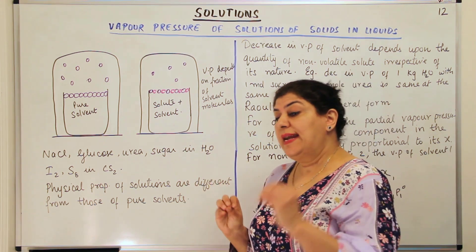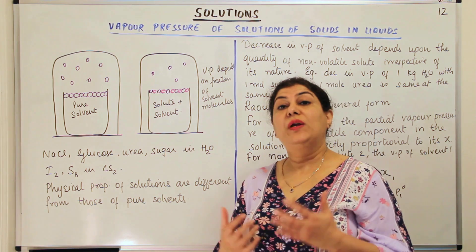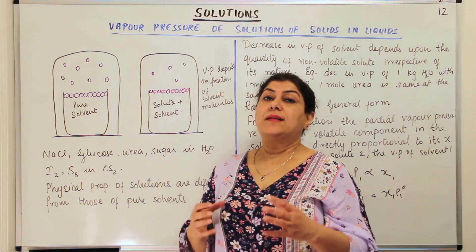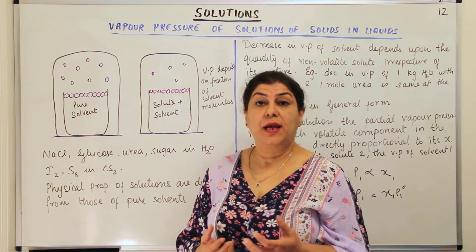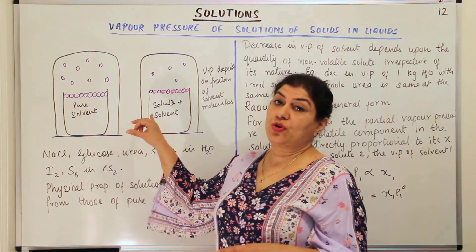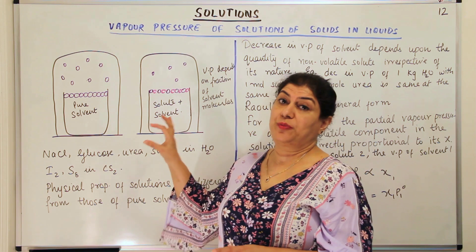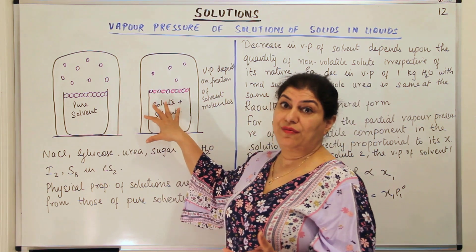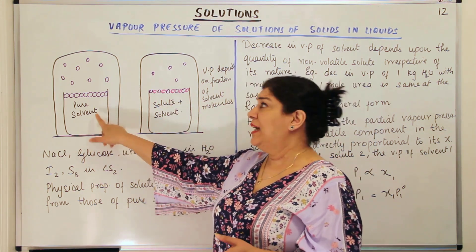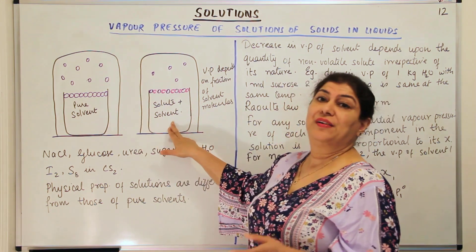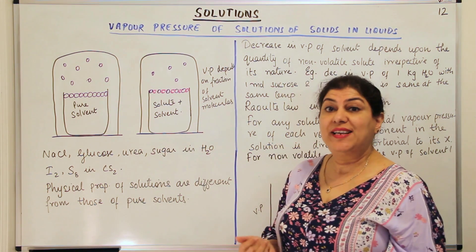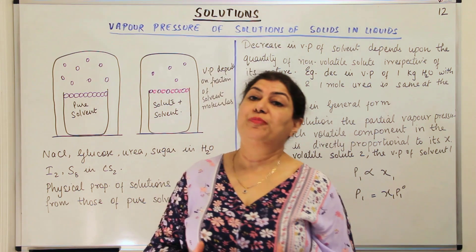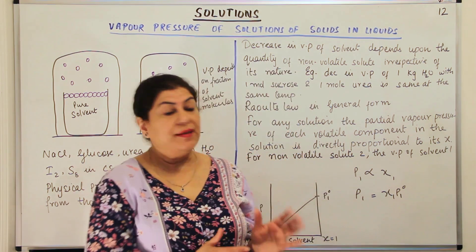Any solution is actually a mixture. There is no chemical bonding between the solvent and the solute, and since there is no chemical bonding, the chemical properties of the components do not change. However, the physical properties of such mixtures are different — as we have seen in the case of vapor pressure. A pure solvent has higher vapor pressure, but when solute is added, the vapor pressure decreases, which is a physical property. So physical properties of solutions differ from those of the pure solvent, while chemical properties remain the same.